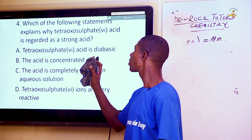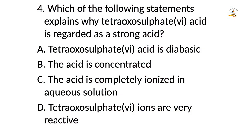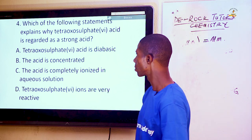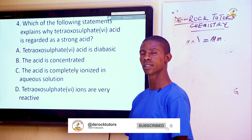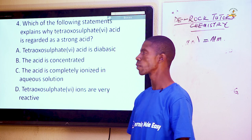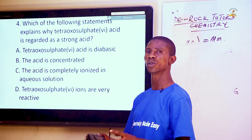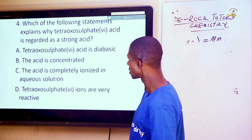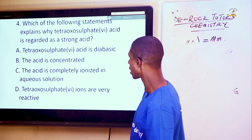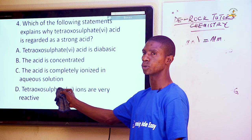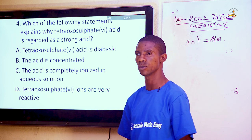Question 4: Which statement explains why tetraoxosulphate(VI) acid is regarded as a strong acid? An acid can be classified as strong, concentrated, corrosive, or dilute. For an acid to be classified as strong, it must completely ionize in water. Option C states the acid is completely ionized in aqueous solution, which is the answer.